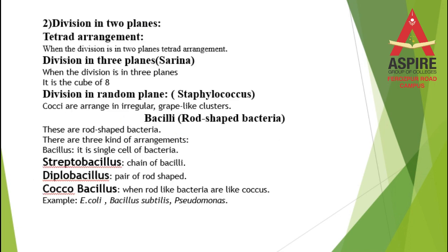The next bacterial shape is the bacillus — a rod-shaped structure. If a bacterium is present in a rod shape instead of a round shape, it is called a bacillus. Within bacillus shapes, different arrangements exist: a single rod-shaped bacterium is a bacillus; two together form a diplobacillus; and in a chain form they are called streptobacillus.